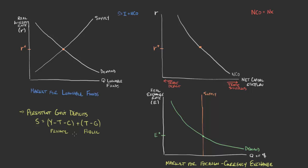What happens when spending increases? An increase in government spending reduces public savings. That increases G, which lowers our public savings. That's going to shift the supply of savings — the supply of loanable funds in the market — to the left. We would shift to this new supply curve shown here in yellow.